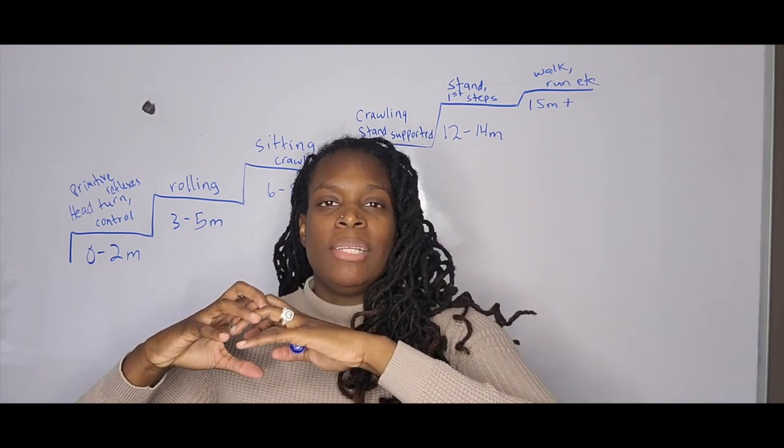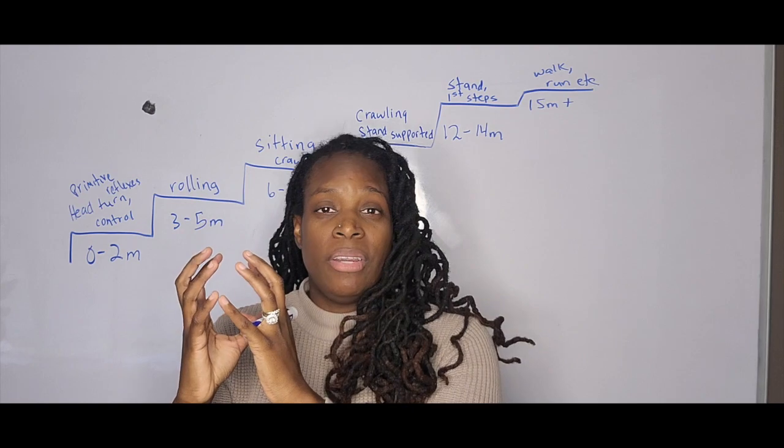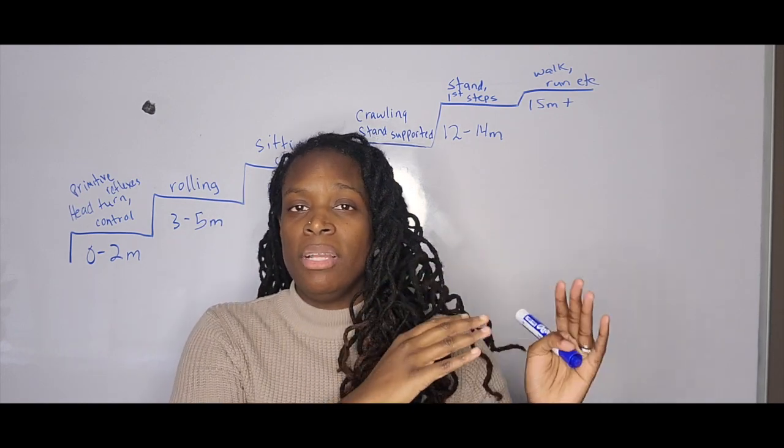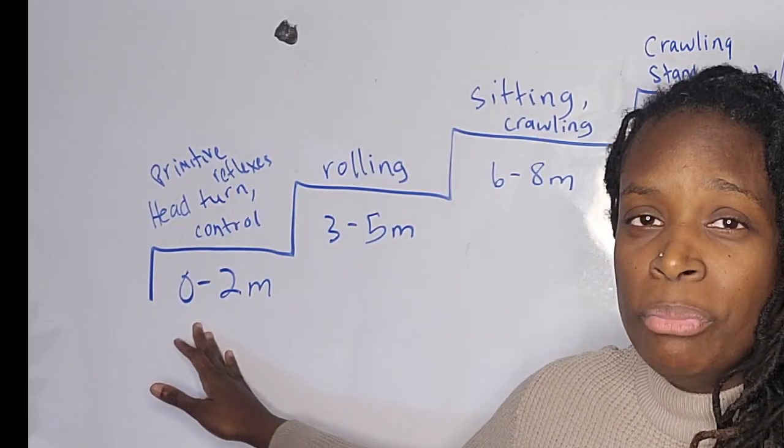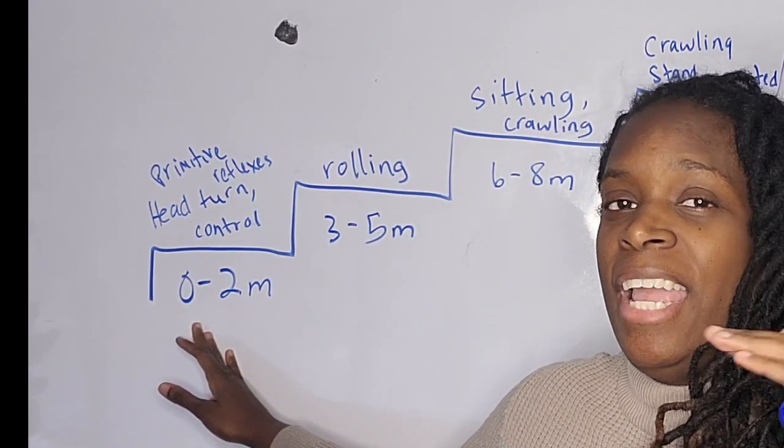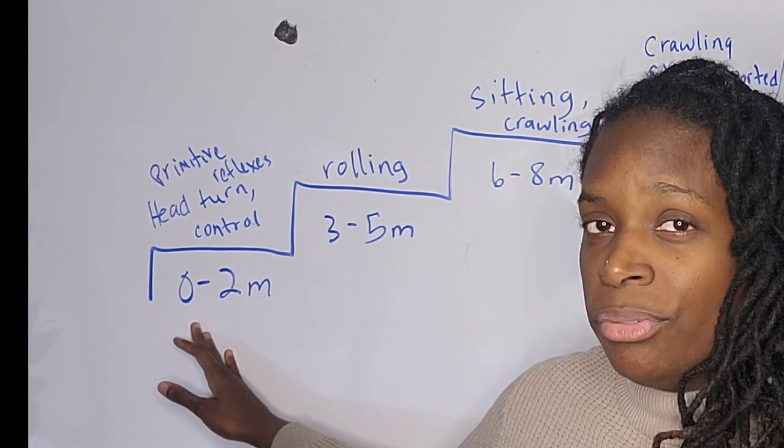This is like your primitive reflexes. This is what needs to be involuntary. And then you're going to move into what is voluntary. So the first thing to look at is from zero to two months, you're looking at head turns, head control.